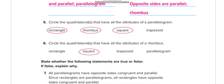Question 5: circle the quadrilateral that has all the attributes of a parallelogram. What are the attributes of a parallelogram? First, opposite sides are equal and of the same length. In a rectangle, opposite sides are of equal length and parallel. In a rhombus also, and in a square also. But in a trapezoid, just one pair of parallel sides, so trapezoid is not suitable.